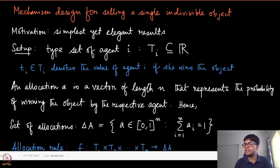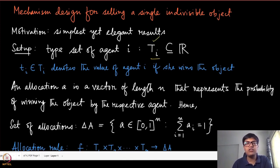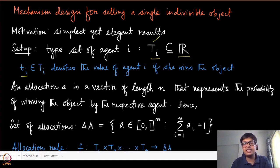In this domain the setup is the following. We have the typeset for each agent. We will modify the notation slightly so that it falls in line with standard definitions of single indivisible object. So t_i, which is the equivalent of capital theta_i as defined elsewhere, is a subset of the real line. A specific type of agent i denotes the value that this agent gets when she wins the object.